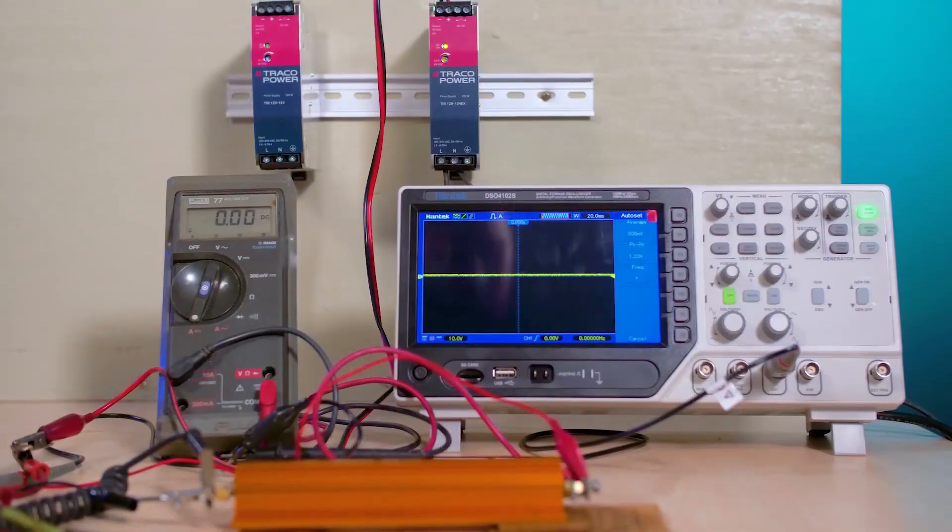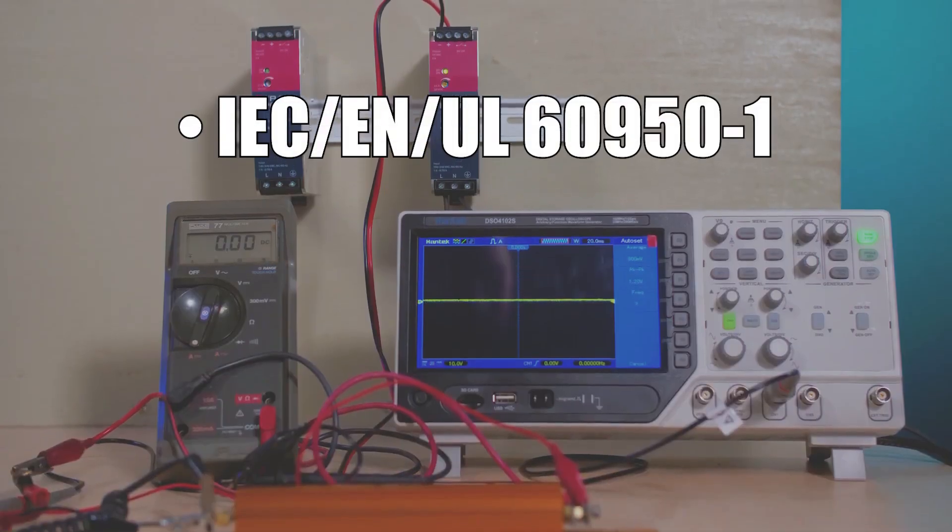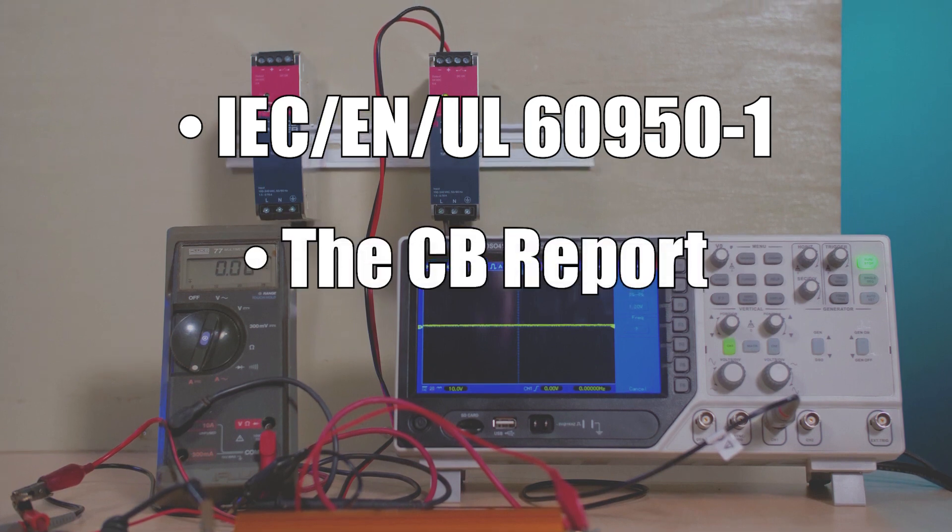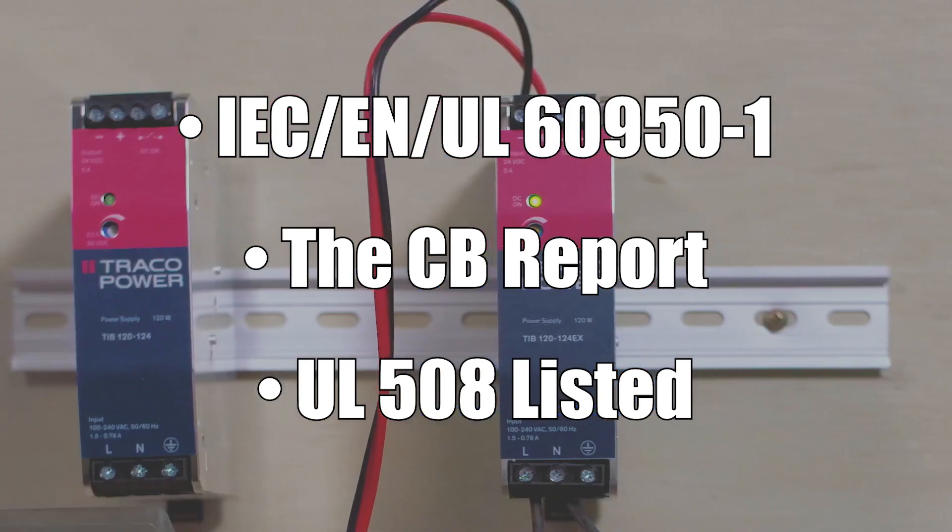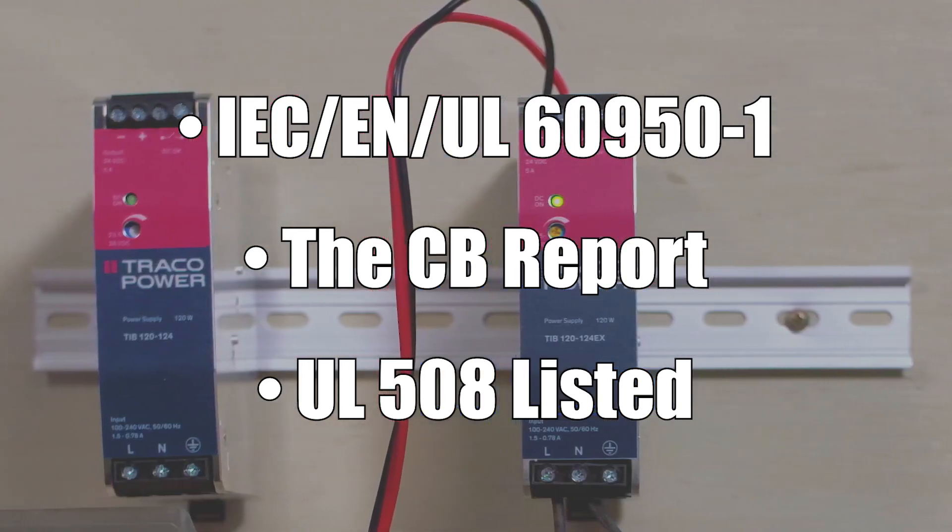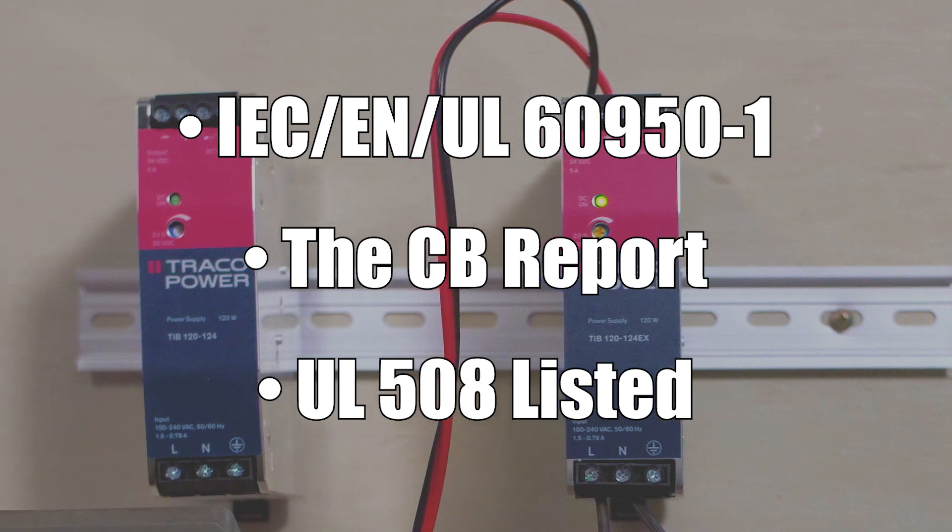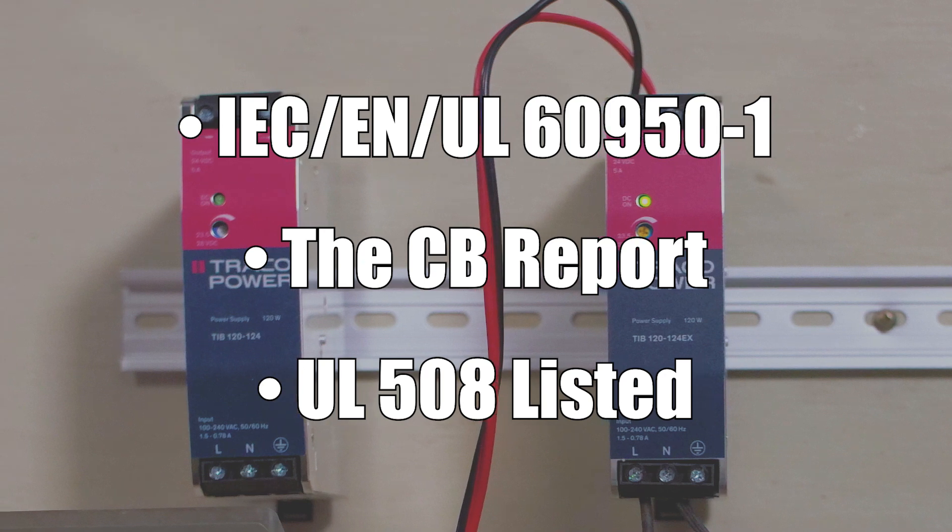Finally we'll point out that the supplies come with standard safety approvals for IEC EN UL 6950-1, the CB report and are UL 508 listed. These are international standards covering the basic safety and performance of electrical industrial equipment and controls for electric motors plus the hazardous location approvals on the EX versions.